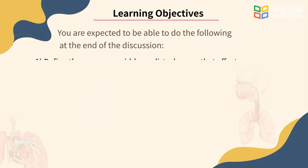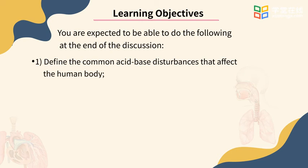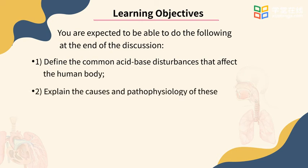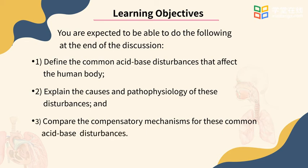Here are the learning objectives. You are expected to be able to do the following at the end of this discussion. First, define the common acid-base disturbances that affect the human body. Number two, explain the causes and pathophysiology of these disturbances. Number three, compare the compensatory mechanisms for these common acid-base disturbances.